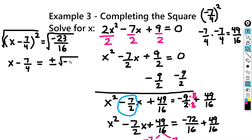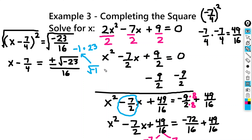Now the negative 23 here could be broken down into negative 1 times positive 23, and the square root of negative 1 is i. So I can rewrite the right-hand side as plus or minus — so we're going to have a complex solution here — plus or minus i square root of 23.